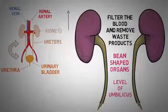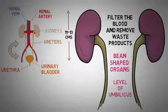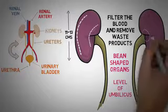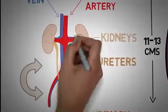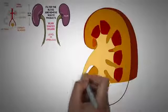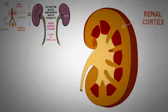Each kidney measures approximately 11–13 cm in length, with the left kidney being slightly larger. The right kidney is placed at a lower level compared to the left kidney. This asymmetry in size and placement is due to the position of the liver on the right side of the body. Each kidney has a convex and concave border. The concave border has a notch-like structure known as the hilum, which is the place where the blood vessels enter and leave the kidney.